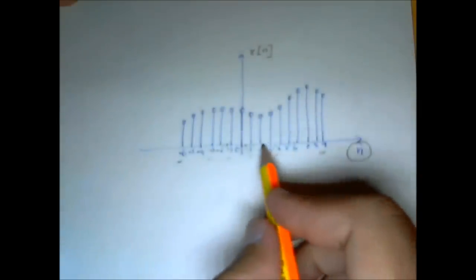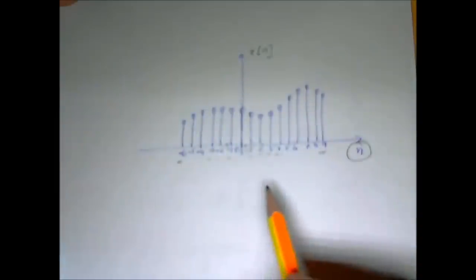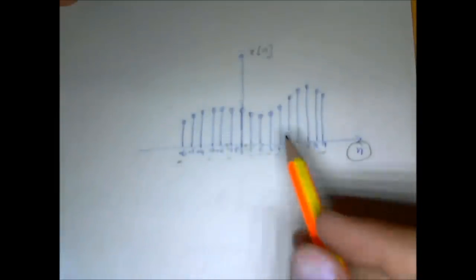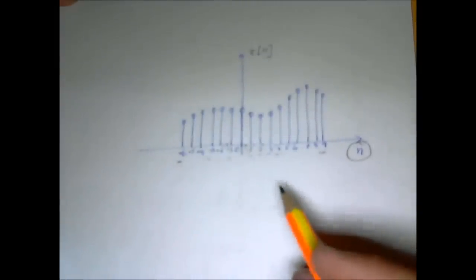I cannot get the value at let's say 2.1. I don't know what the value of x is at 2.1. I don't know what the value is at let's say 5.5. I do not know that. So that's what a discrete time signal is.